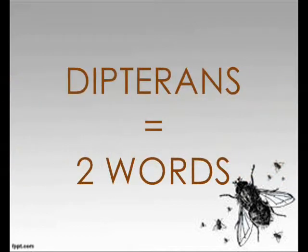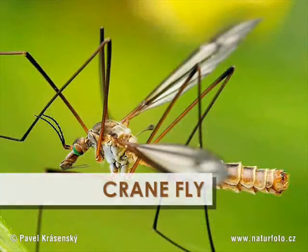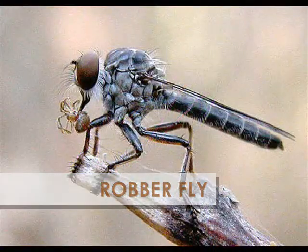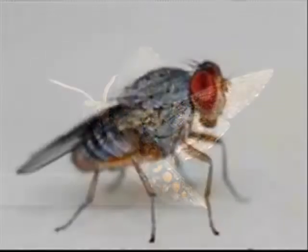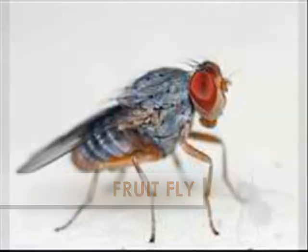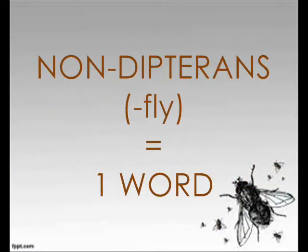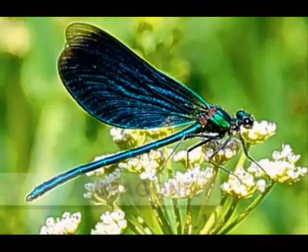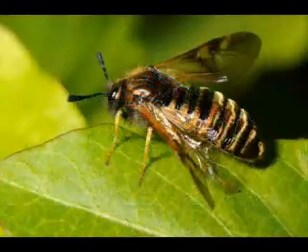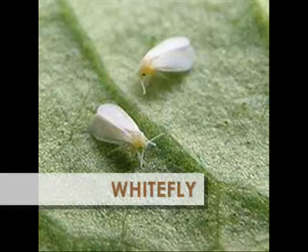Common names of the members of this order are written as two words. On the other hand, non-dipteran insects with 'fly' in their names are written as one word. Examples include: Butterfly, Stonefly, Scorpionfly, Dragonfly, Sawfly, and Whitefly.